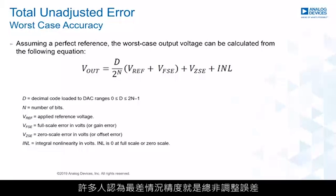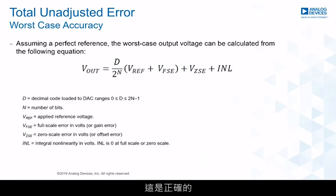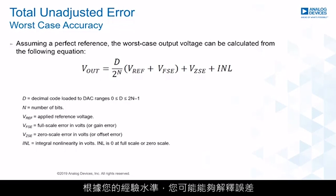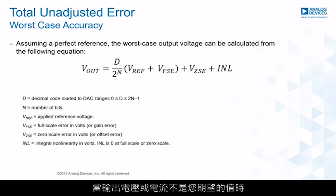Many people take the worst-case accuracy to be the total unadjusted error, and they are correct. It is effectively the worst-case deviation the actual output voltage can be from the ideal. If you program your DAC, you expect the output to settle to a certain value, but depending on your level of experience, you may account for the errors, or be surprised when the output voltage or current is not where you expect it to be.